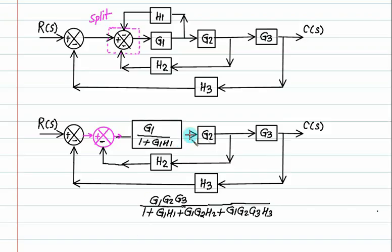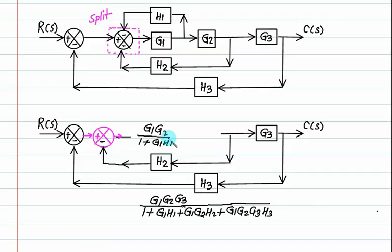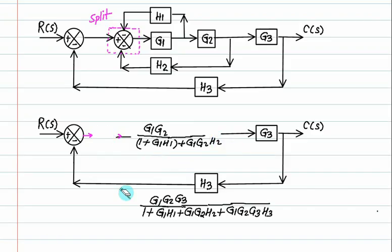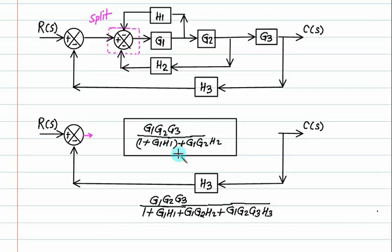Now, is this new block and the next block in a series operation? Yes, so they combine into G2. Then this combination and the next block form a feedback. The answer equals G1 G2 upon 1 plus G1 H1. The sign of feedback is opposite, so the denominator includes plus G1 G2 multiplied by feedback H2. This part cancels, and the remaining blocks go in series, leaving G3. The final transfer function is in numerator-over-denominator form, with numerator multiplied by feedback.